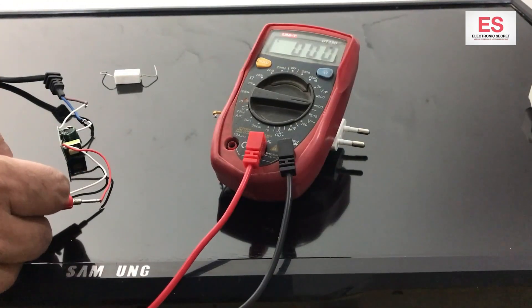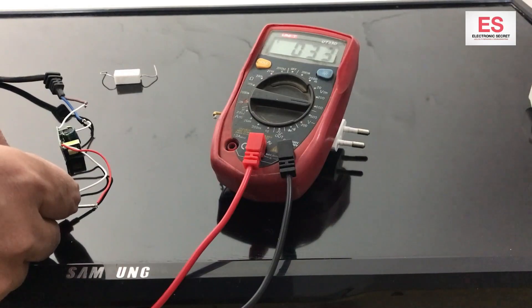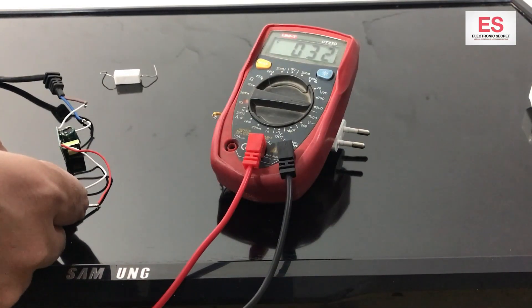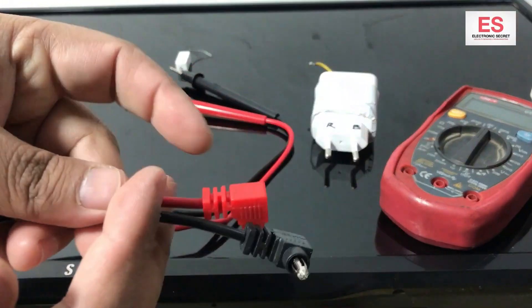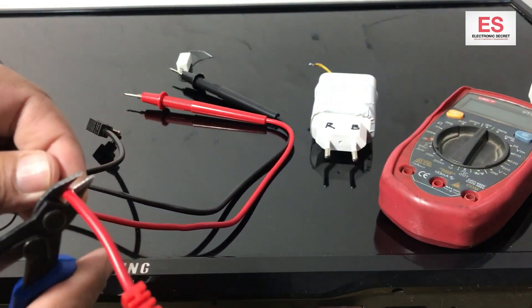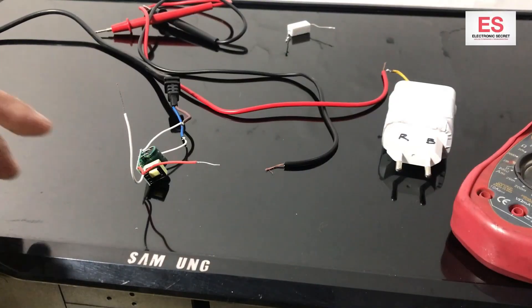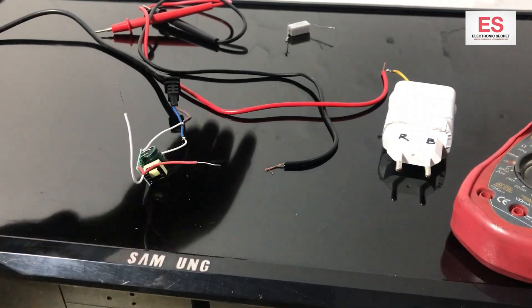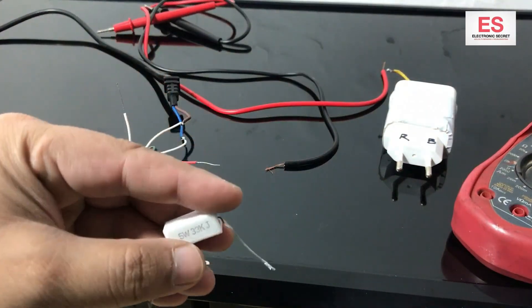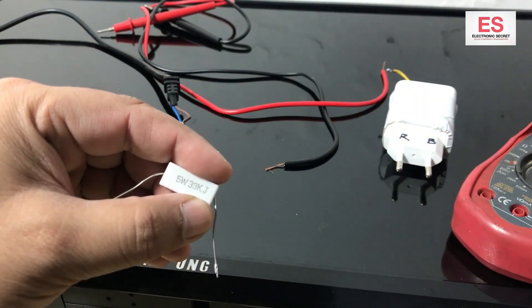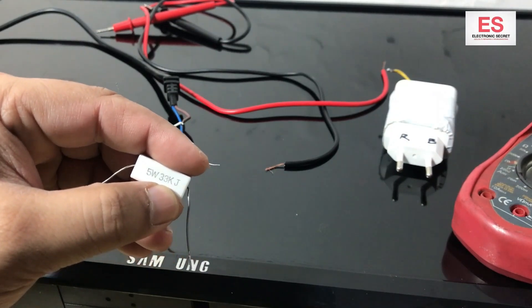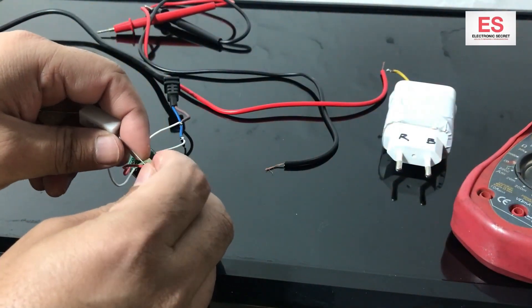Now I will check the output voltage, how much voltage is coming. You can see that it is showing 33 volt DC. Take two probes and cut them.